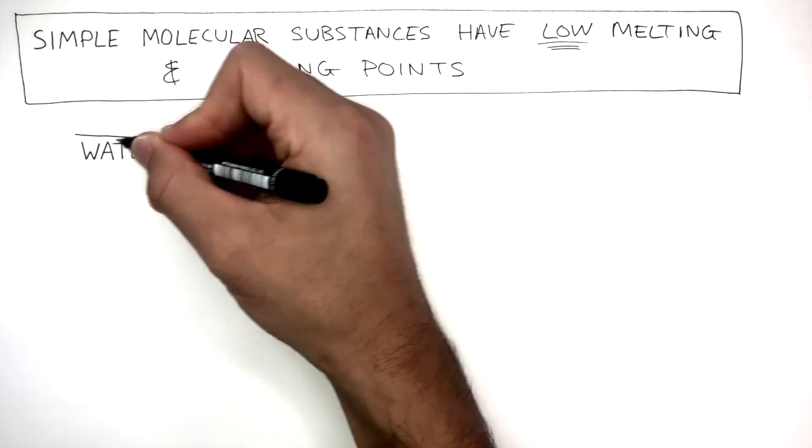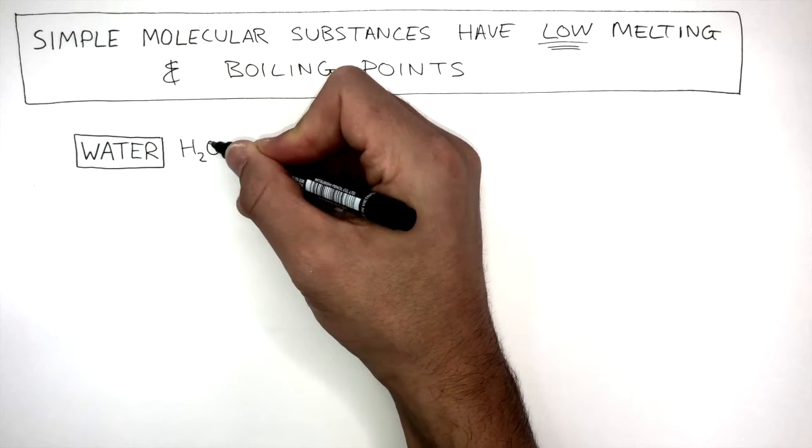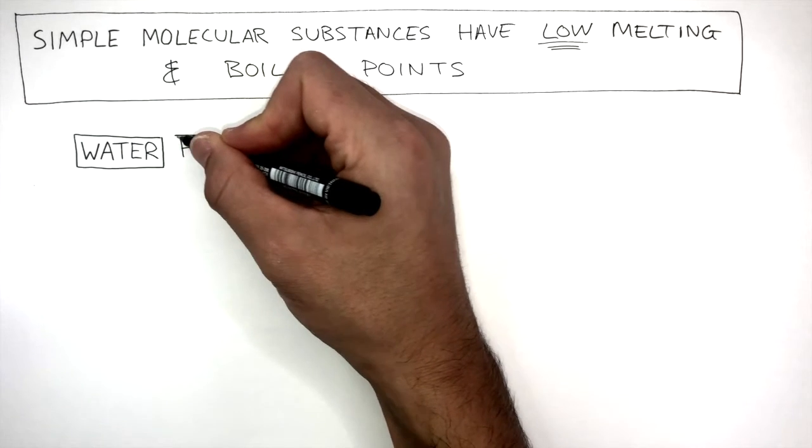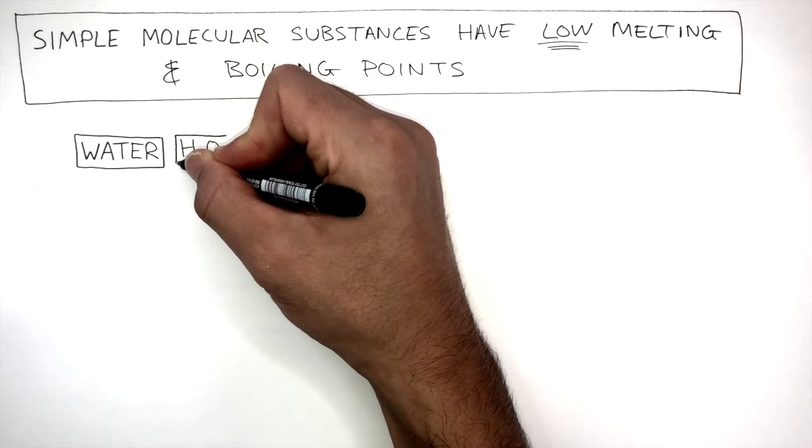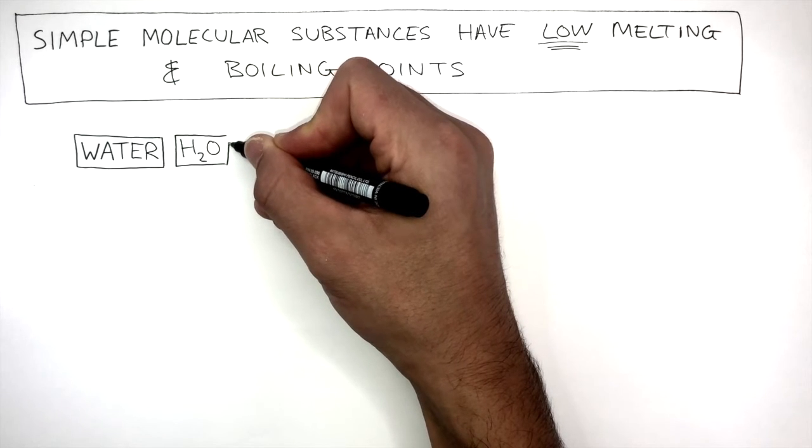Water is a simple molecular substance and its molecular formula is H2O. The atoms that make up this molecule are covalently bonded to each other. Covalent bonds are strong, so why does water have such a low melting and boiling point?